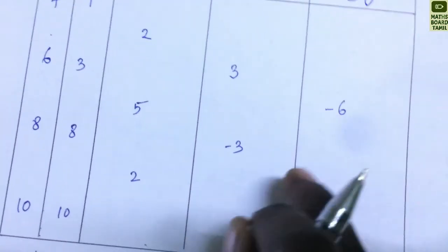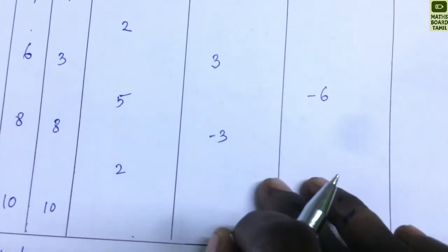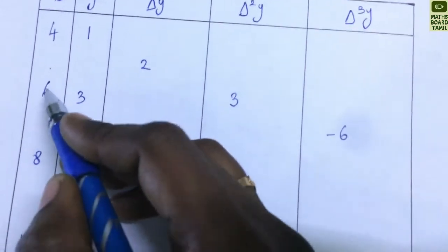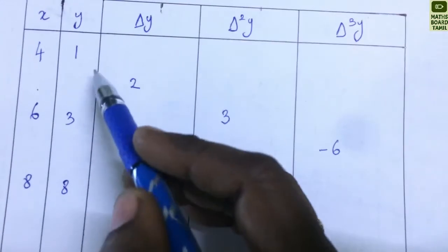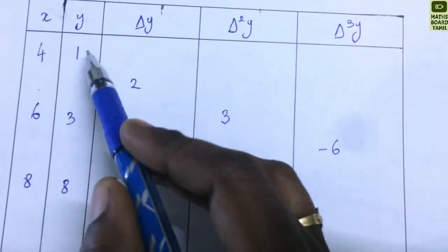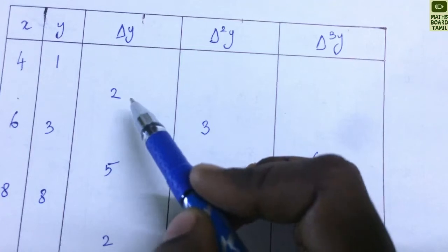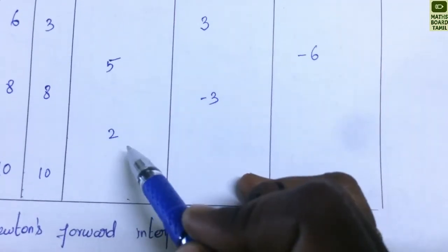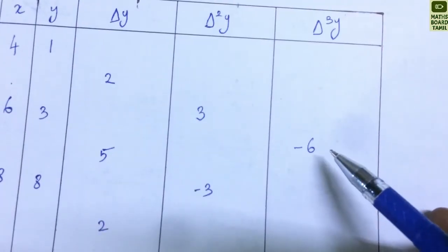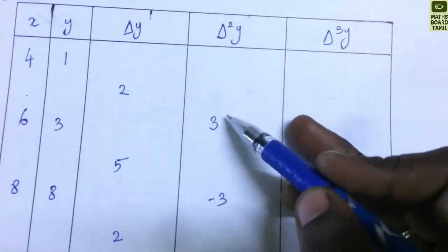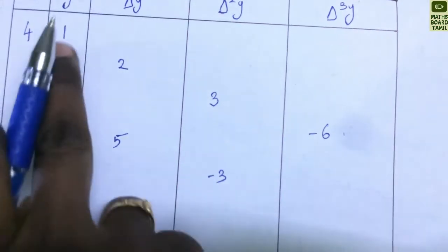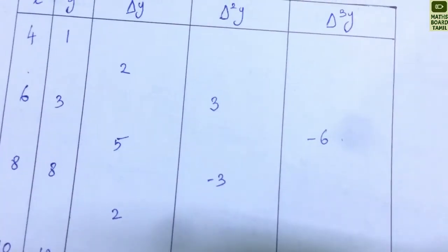We label the table entries: x0, x1, x2, x3 and y0, y1, y2, y3. The forward differences are Δy0, Δy1, Δy2, then Δ²y0, and Δ³y0. In the first row we write the values: Δy0, Δ²y0, Δ³y0.